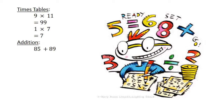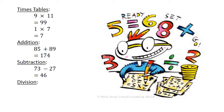Addition: 85 plus 89 equals 174. Subtraction: 73 minus 27 equals 46. Division: 77 divided by 11 equals 7.